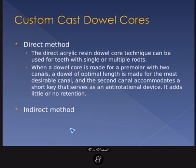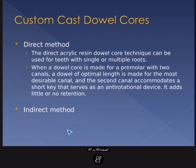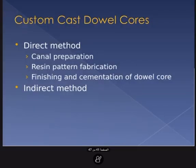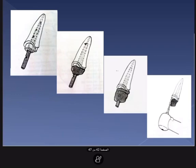There is also a custom dowel core system, made using a direct or indirect method. The direct acrylic resin dowel core technique can be used for teeth with single or multiple roots. When making a dowel core for a premolar with two canals, a dowel of optimal length is made for the most desirable canal, and a shorter key is made for the second canal — it adds little retention but acts as an anti-rotation device. Direct means made directly in the patient's mouth; indirect means made outside.